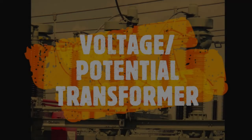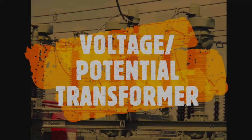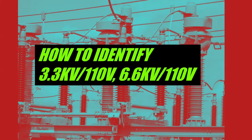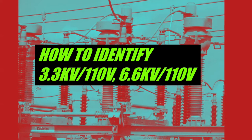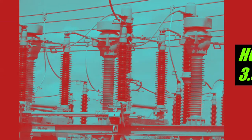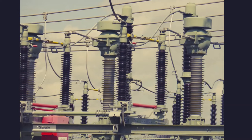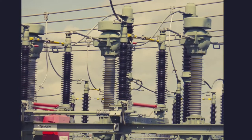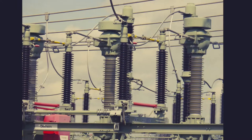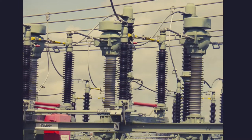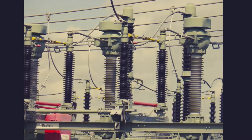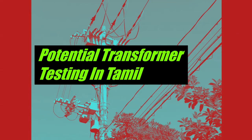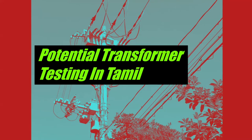Hi guys, in this video we are going to talk about voltage transformers. How do you identify the voltage transformer? It is identified by KV. For example, primary is 3.3KV and secondary is 110V, or primary is 6.6KV and secondary is 110V. This is how we identify and use the voltage transformer.